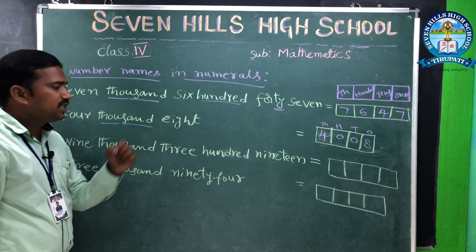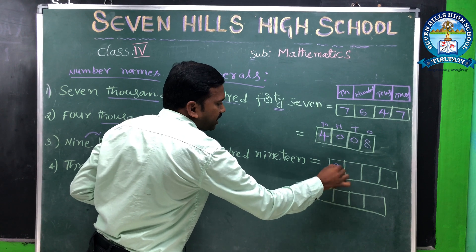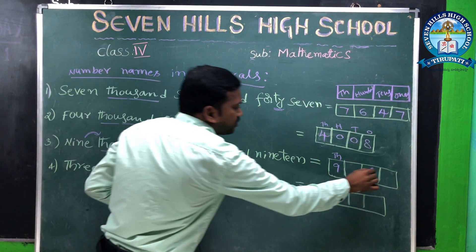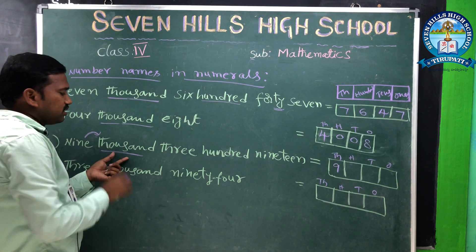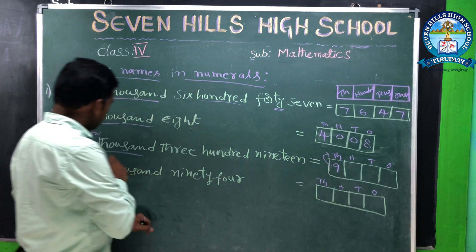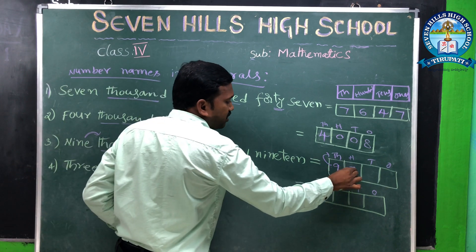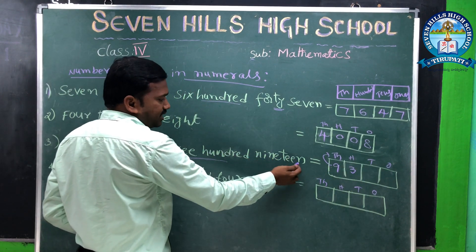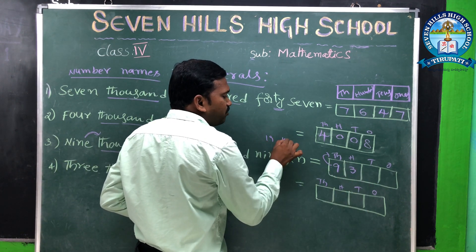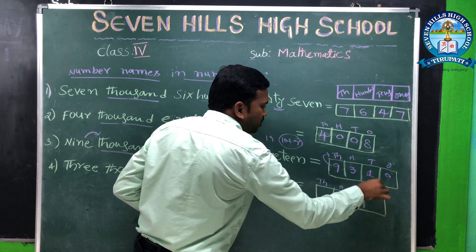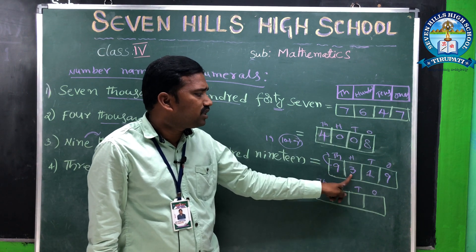Next: 9319. 9000 means 9 is in the thousands place. 300 means 3 is in the hundreds place. 19 means 10 plus 9 — so 1 ten in the tens place and 9 in the ones place. The number is 9319.